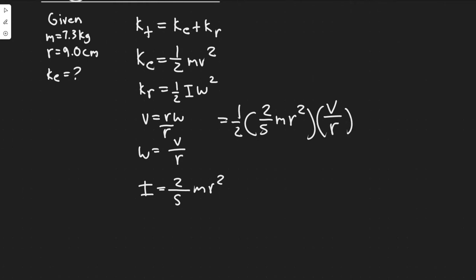So v over r squared. If you do this, you're going to get v squared over r squared, meaning the r's cancel. And then 2 over 5 times 1 half is the same as 2 over 10, which is 1 over 5. So simplifying these, you have m v squared.